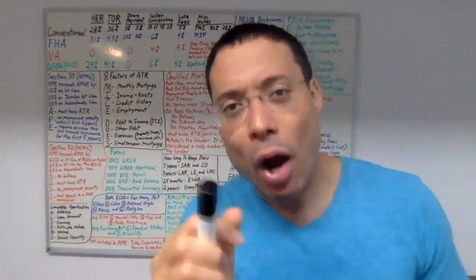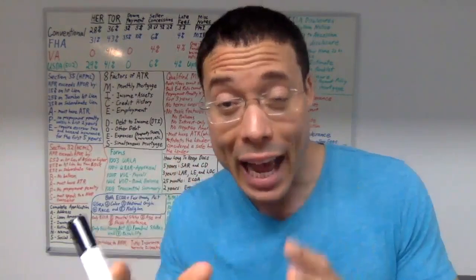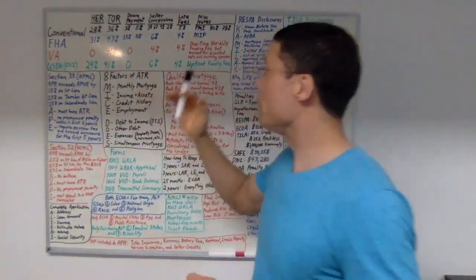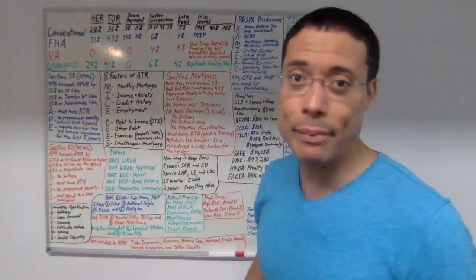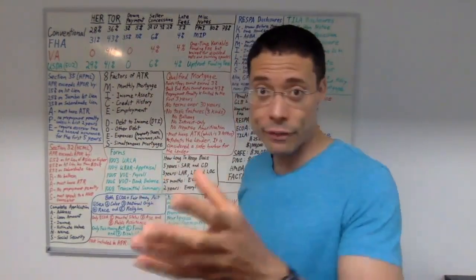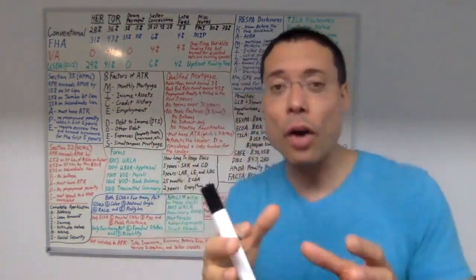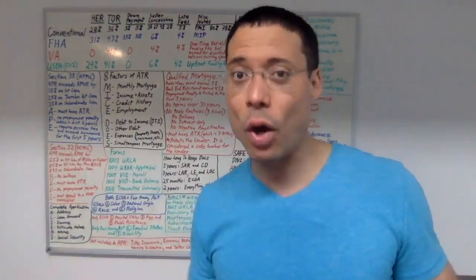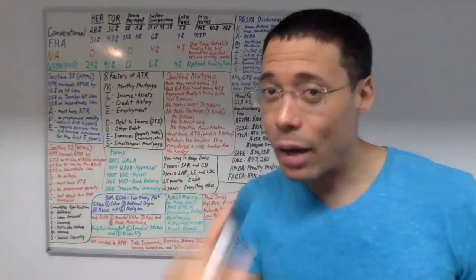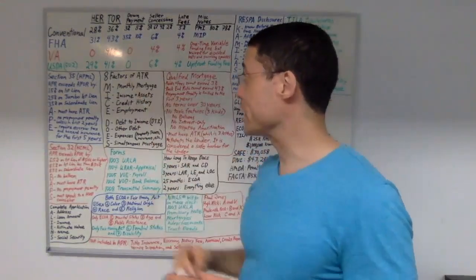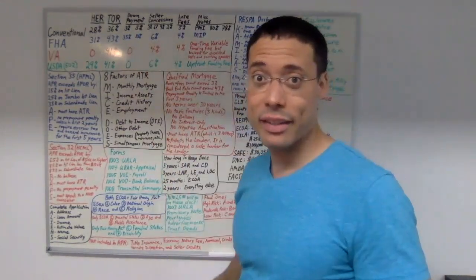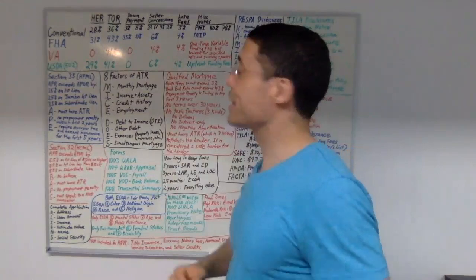Regarding down payments, if the borrower is a first-time homebuyer, then the minimum required down payment is 3% for a conventional loan. If the borrower is not a first-time homebuyer, then the minimum required down payment for a conventional loan is 5%.